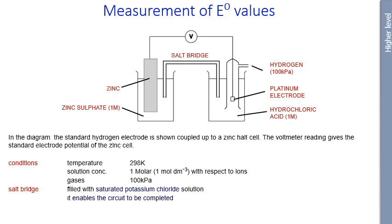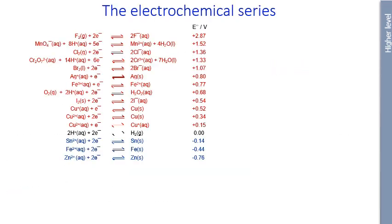To measure E° values, we use zinc and zinc sulfate solution as an example. The standard hydrogen electrode is coupled to the zinc half cell, and the voltmeter reading gives the standard electrode potential for the zinc cell. Standard conditions are 298 K temperature, one mole per dm³ concentration, and for gases like hydrogen, 100 kPa. The salt bridge is filled with saturated potassium chloride solution, which allows the circuit to be completed.